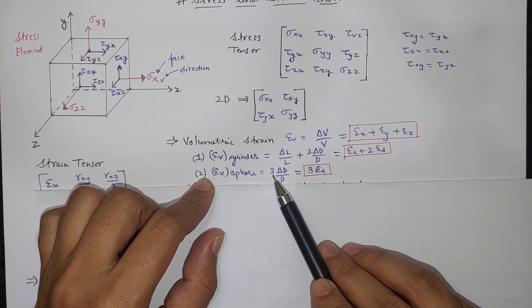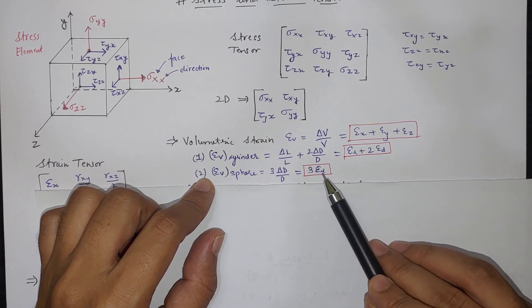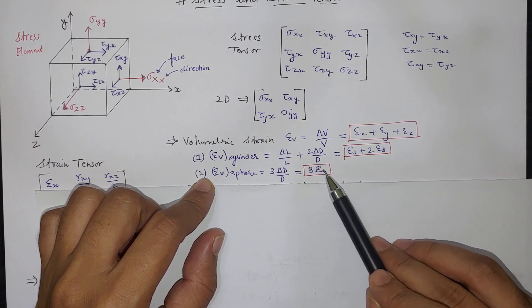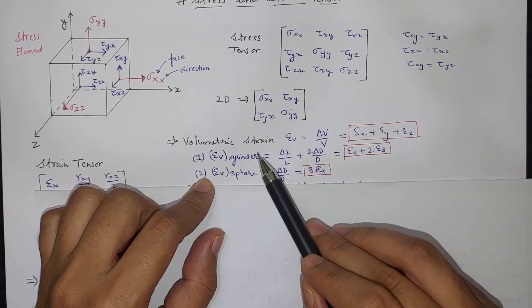Here in sphere all three directions are same. So three times change in diameter upon diameter. So three times epsilon D which is strain in diameter. So that is for sphere and cylinder.